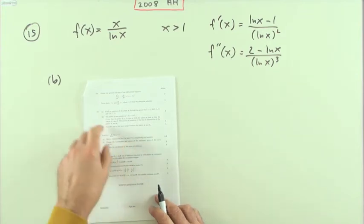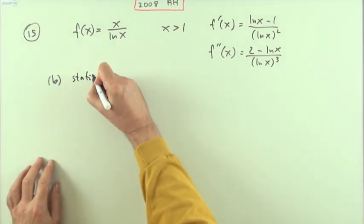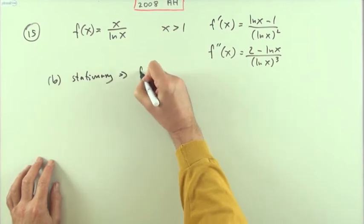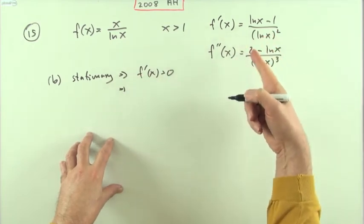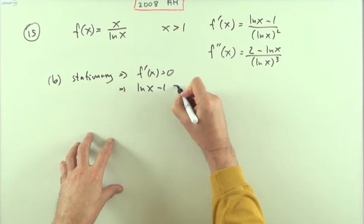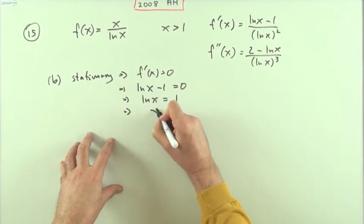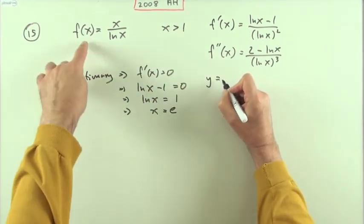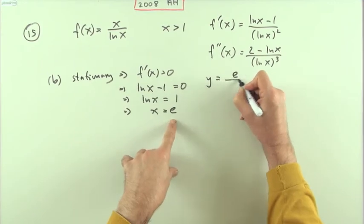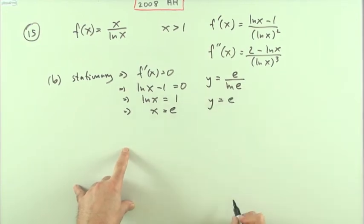Part b: obtain the coordinates and the nature of the stationary point of the curve. The stationary point means that the derivative should equal zero. If the derivative equals zero, and it's a rational expression, it's sufficient for the numerator, ln x minus one, to equal zero. In which case ln x equals one, so x equals e to the power one, which is e. Feeding it back in, the y coordinate will be given by f of x, which is e over ln e, and ln of e is just one, so it's also e. So there's the stationary point: (e, e).